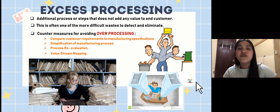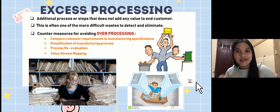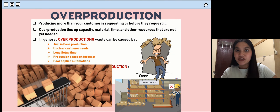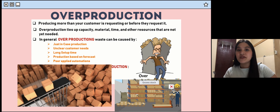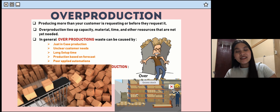The second waste is excess processing, which occurs when processes move too slowly — such as slow approval processes, excess reporting, and duplicating data. The third is overproduction: too much product and not enough immediate need results in waste. If customer needs aren't clear or forecasting data is inaccurate, overproduction can lead to wasting time, material, and labor alike.